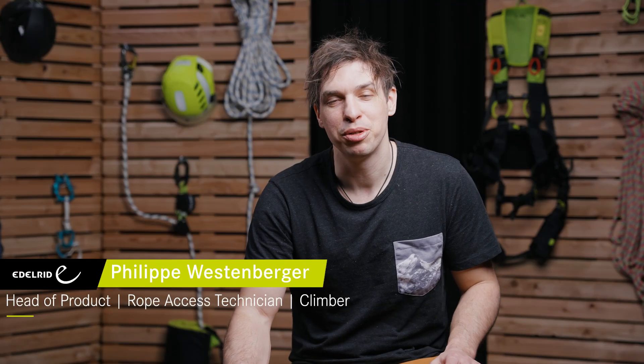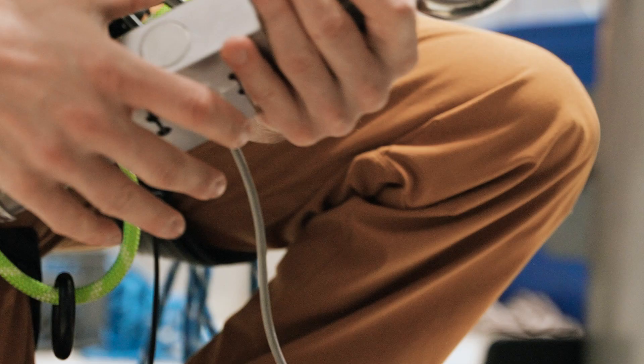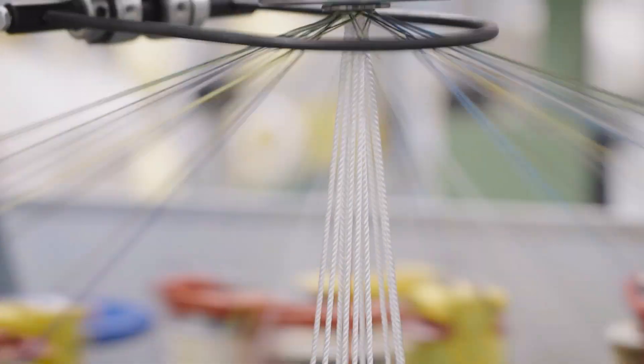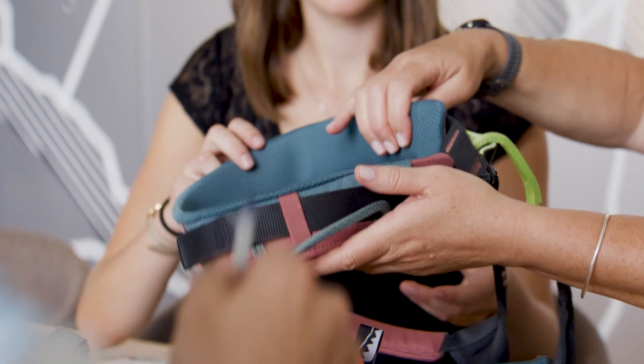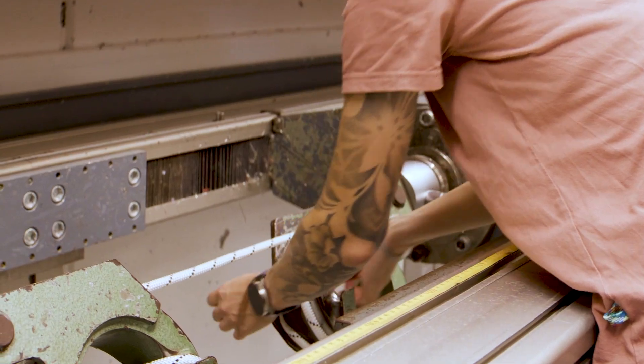Hi, my name is Phil. I am the head of product here at Edelrid and that means I oversee our development teams that are ranging from ropes to shoes to apparel, all the other textiles as well as the hardware development and the product management team.